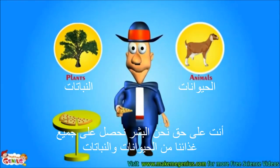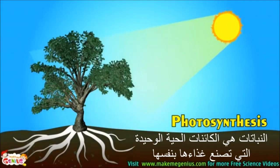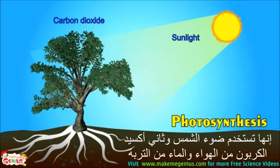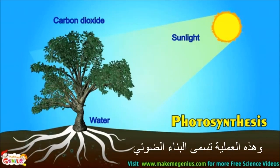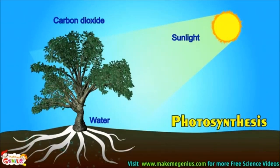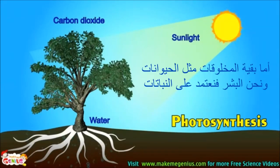Let me tell you more about food. Plants are the only living species that make their own food. They use sunlight, carbon dioxide from air, and water from soil to make their food. This process is called photosynthesis. So now you know plants make their own food.